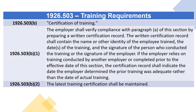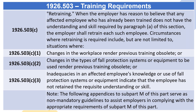If the employer relies on training conducted by another employer or completed prior to the effective date of this section, the certification record shall indicate the date the employer determined the prior training was adequate, rather than the date of actual training. 1926.503(b)(2) — The latest training certification shall be maintained.